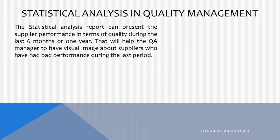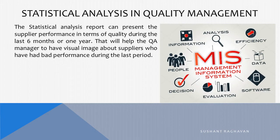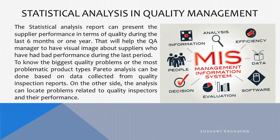The statistical analysis report can present the supply performance in terms of quality during the last six months or one year. That will help the QA manager to have a visual image about suppliers who have had bad performance during the last period. To know the biggest quality problems or the most problematic product types, Pareto analysis can be done based on data collected from quality inspection reports. The analysis can also locate problems related to quality inspectors and their performance.